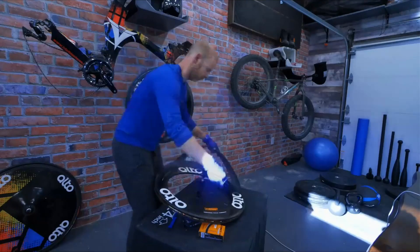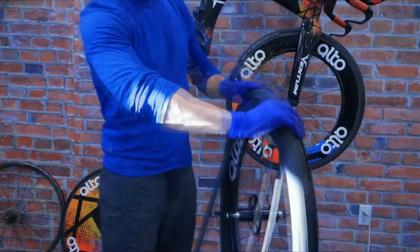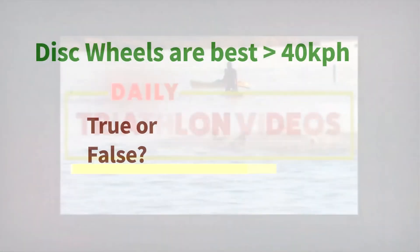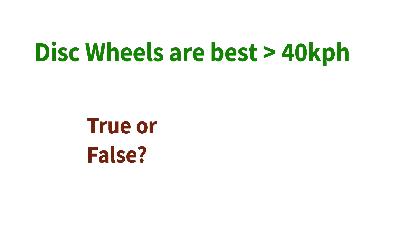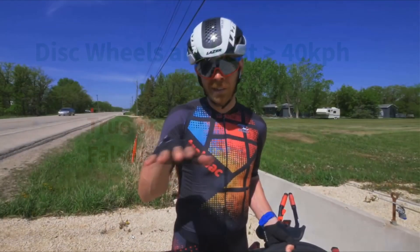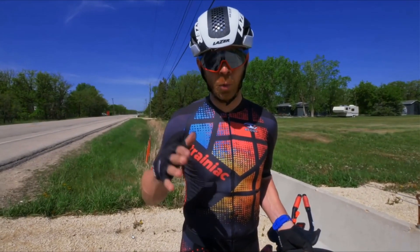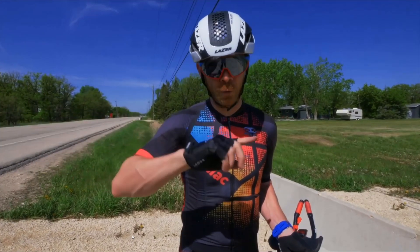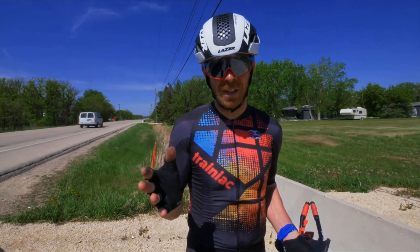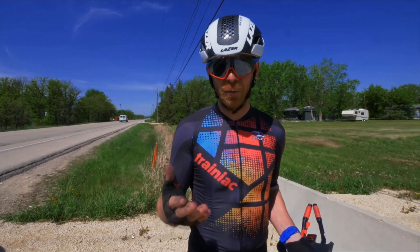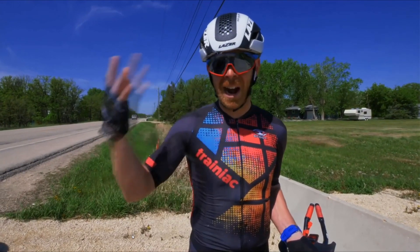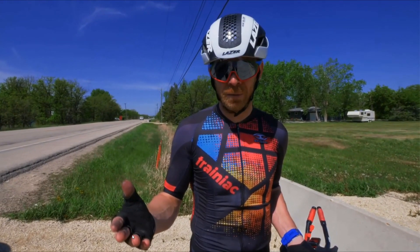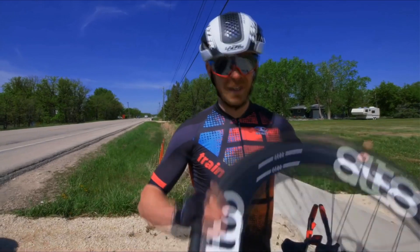In the slower speed scenario at 175 watts, he actually found the opposite of what we normally expect. In his field test, the disc wheel was slower. He quoted Cameron Wirth saying discs are only valuable at high speed. A few people wrote to us about this — check out the comments on Triathlon Taren's video.